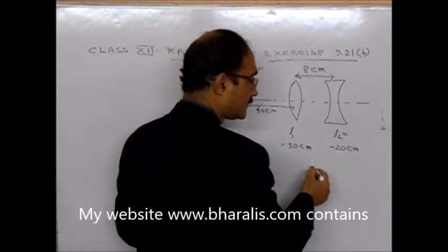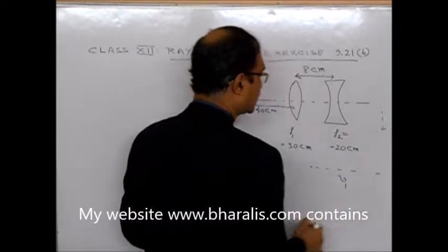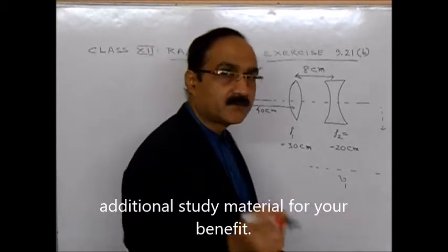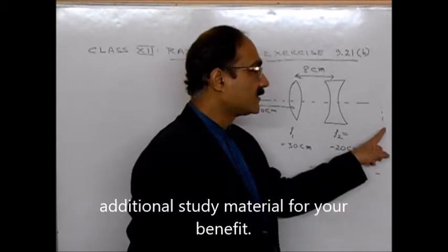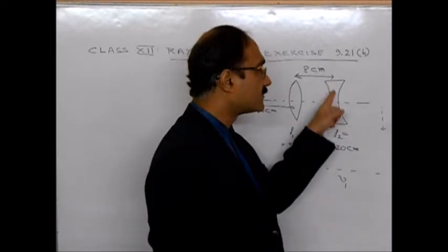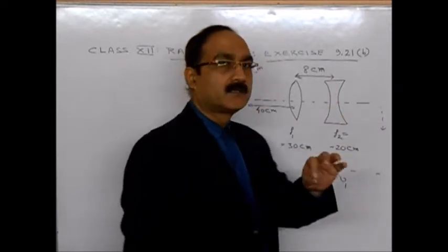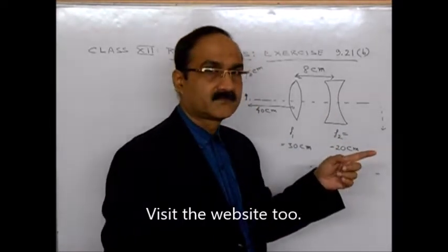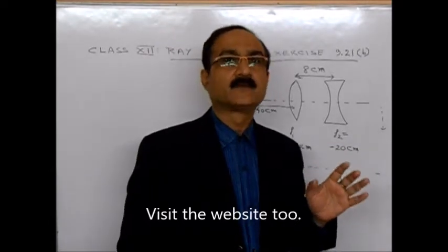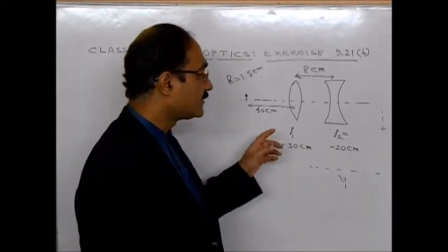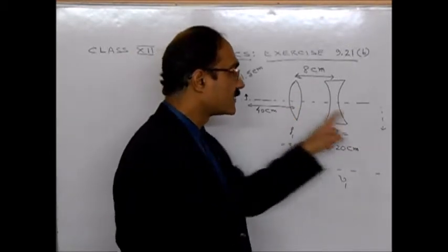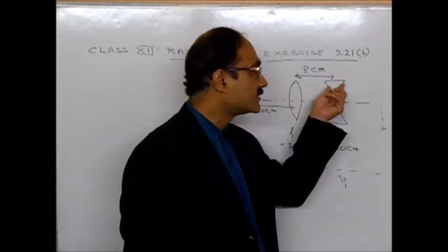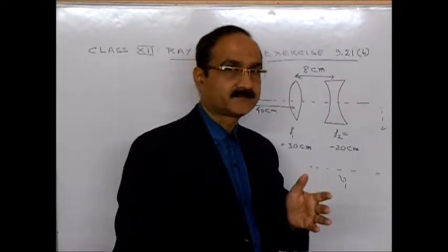So what we do first is, for this object and the convex lens, we first find the image formed by this convex lens. Say the image is formed somewhere here, at this point somewhere. This will be V1, image distance for this convex lens. Then, what we do is, we treat this image as an object for this concave lens and we solve it to find the image distance of this concave lens.